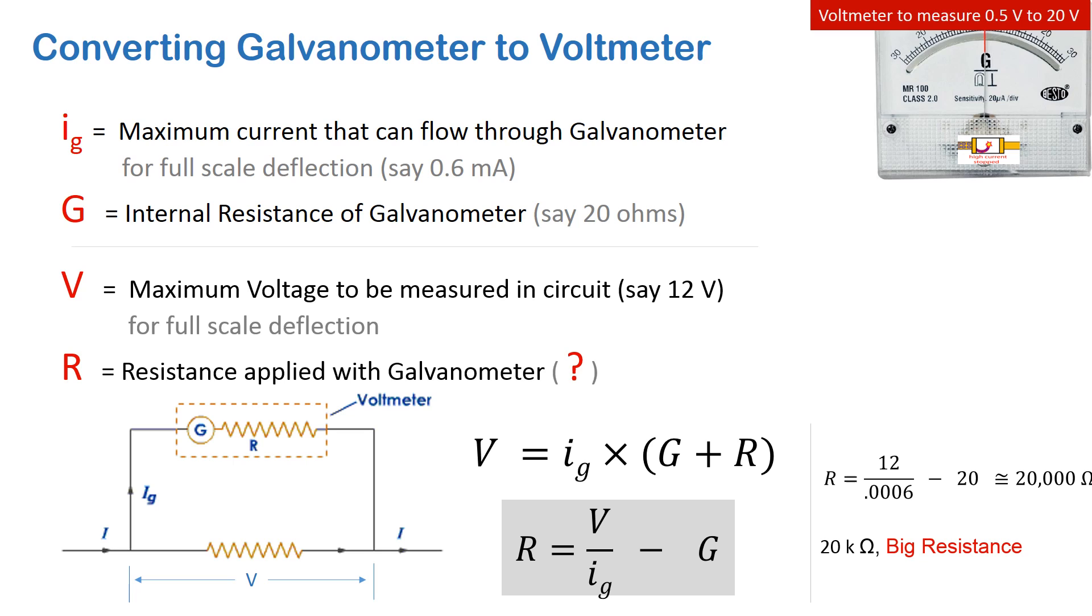So now by putting this large resistance along with the galvanometer, we can measure voltages up to 12 volts.